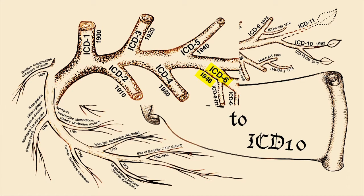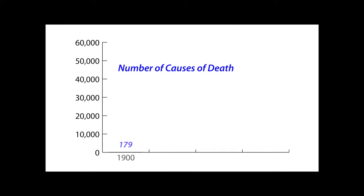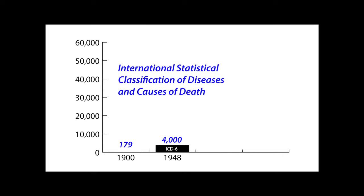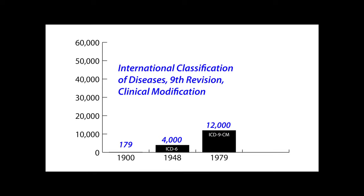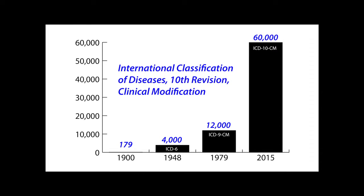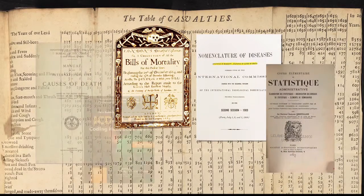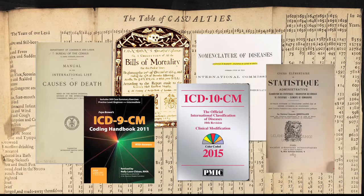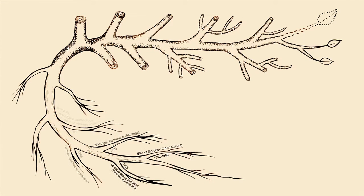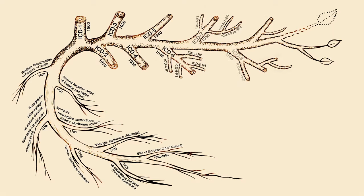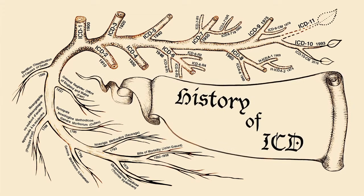Starting with the 6th classification of ICD in 1948, the classification was expanded from 179 causes of death to include over 4,000 diseases. These categories grew to 12,000 with ICD-9, to over 60,000 with ICD-10. The ICD tradition has facilitated international comparisons of death and disease for over 100 years, and it is expected to continue for a long time to come.